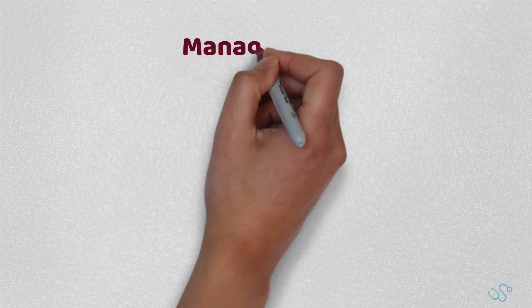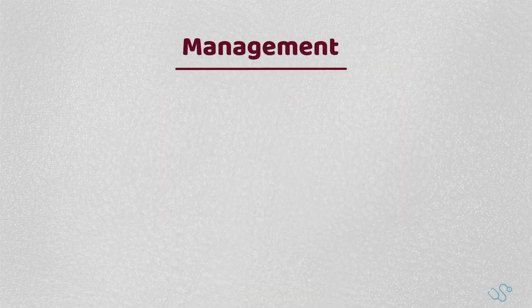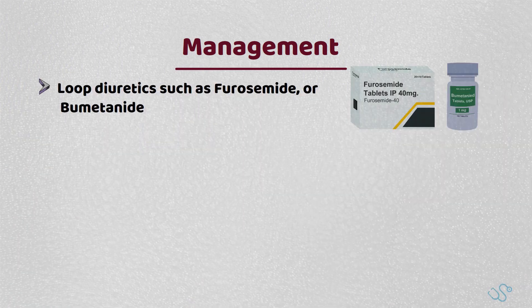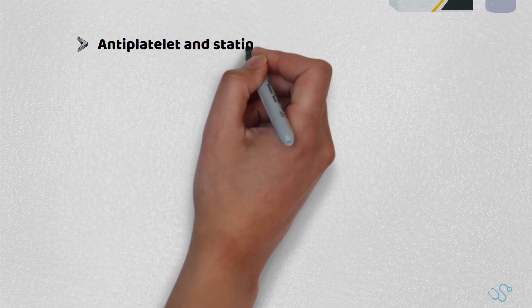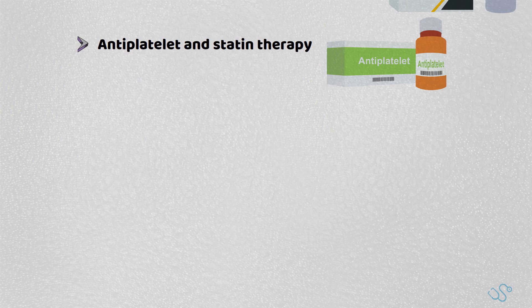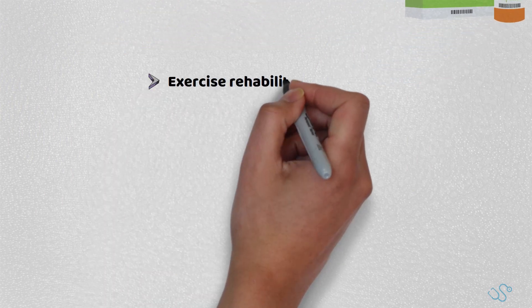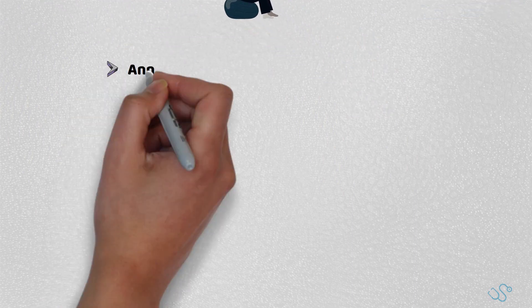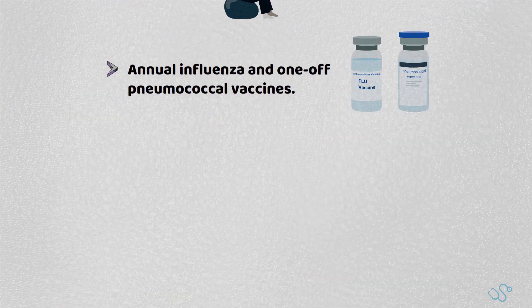In terms of management, this really depends on the status of the patient. In all patients, if the patient is fluid overloaded, then loop diuretics such as furosemide or bumetanide are recommended to equalise fluid balance. NICE recommend to consider the use of antiplatelet therapy and statins if indicated to help manage any precipitating factors such as hypertension, angina, arrhythmia and diabetes. All patients should also be offered a referral to an exercise rehab programme, with patients encouraged to update their annual influenza and one-off pneumococcal vaccines.